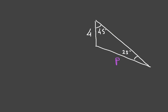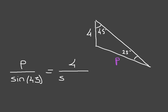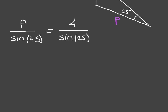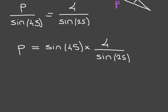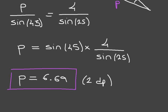We can definitely use the sine rule here, and we can go ahead and write P over sine of 45 is equal to 4 over sine of its opposite angle, which is 25. Again, we rearrange this — multiply both sides by sine of 45 — which leads us to P = sine(45) × 4 / sine(25). Using our calculators and rounding to two decimal places, we find P is equal to 6.69. And there we go — we just used the sine rule again to find an unknown side length inside a triangle.